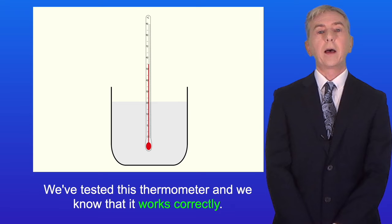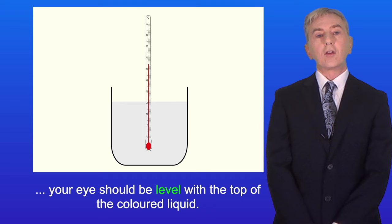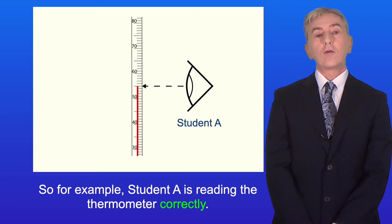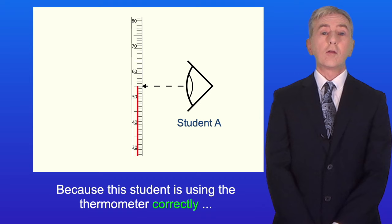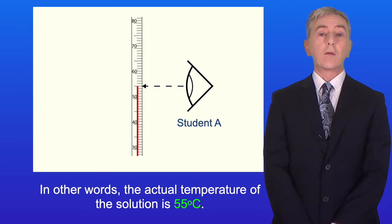Now when you use a thermometer your eye should be level with the top of the coloured liquid. For example, student A is reading the thermometer correctly. This student finds that the temperature of the solution is 55 degrees Celsius. Because this student is using the thermometer correctly, this is likely to be an accurate reading. In other words, the actual temperature of the solution is 55 degrees Celsius.